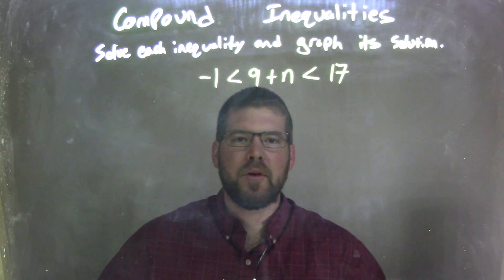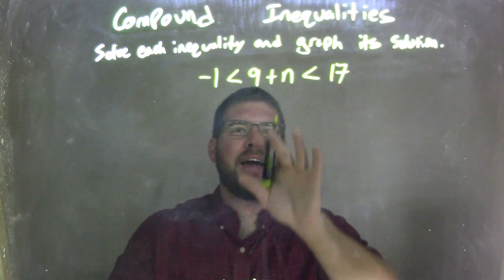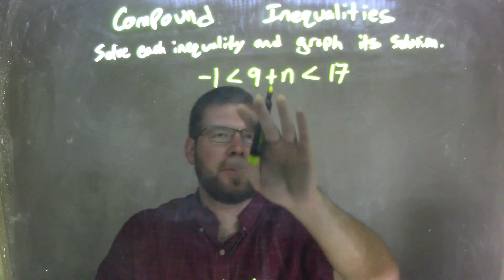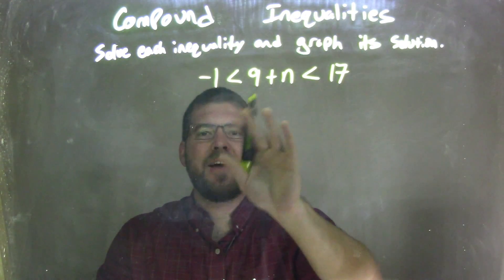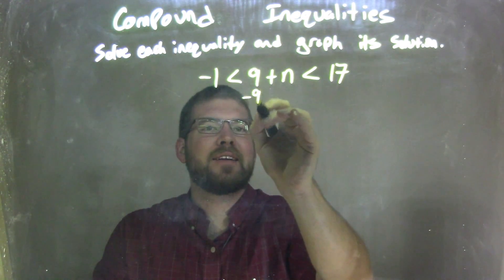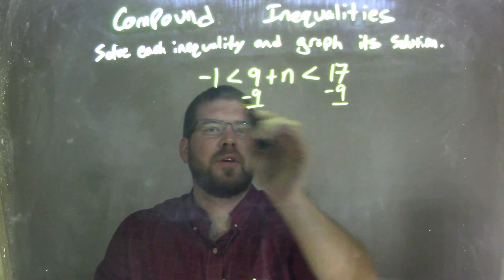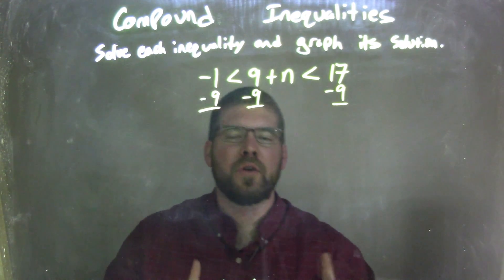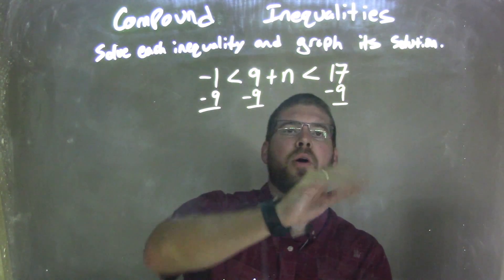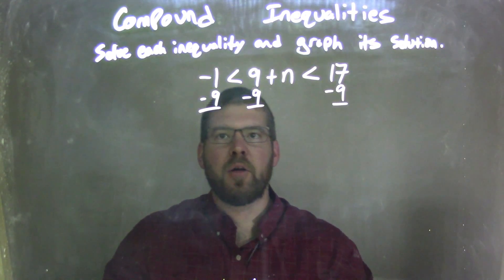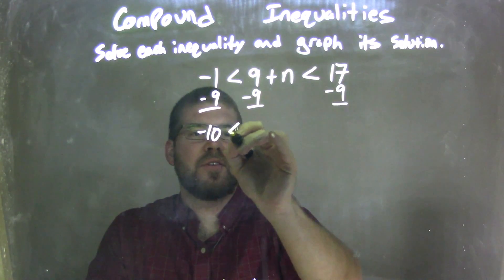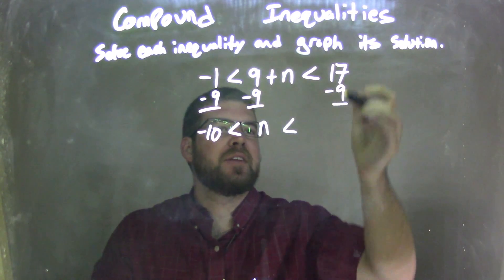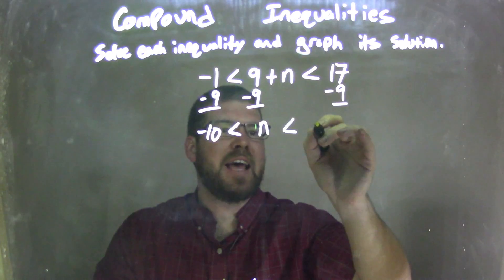Well, my first step here is I want to simplify this, getting n by itself. Now n's in the middle here, between our two inequalities. So when I want to move the 9, I have to move the 9 to all parts. So if I subtract 9 like this, I subtract 9 over here and over there, to all three parts. So negative 1 minus 9 is negative 10, still less than, what's left here is just my n, is less than 17 minus 9, which is 8.